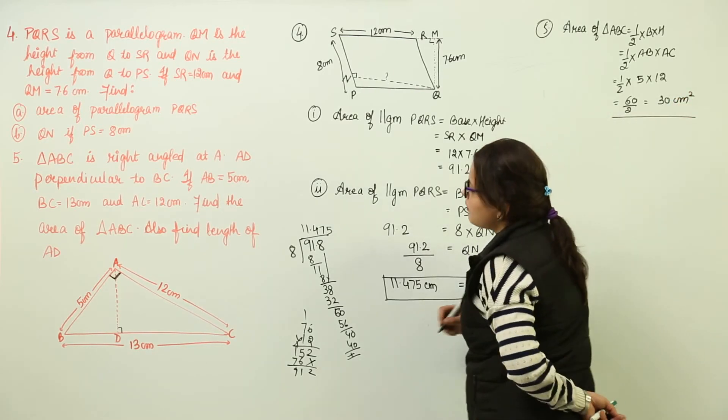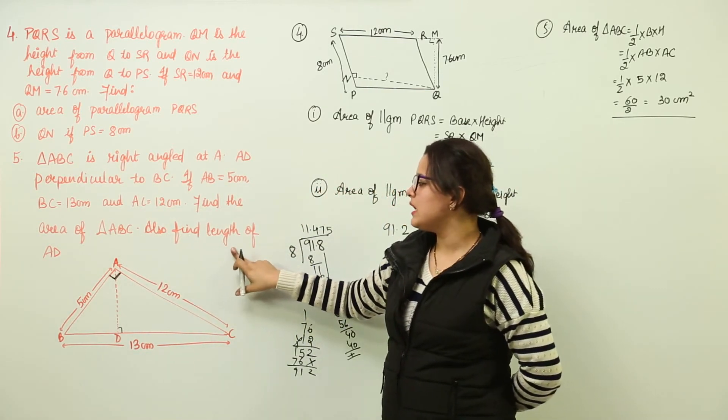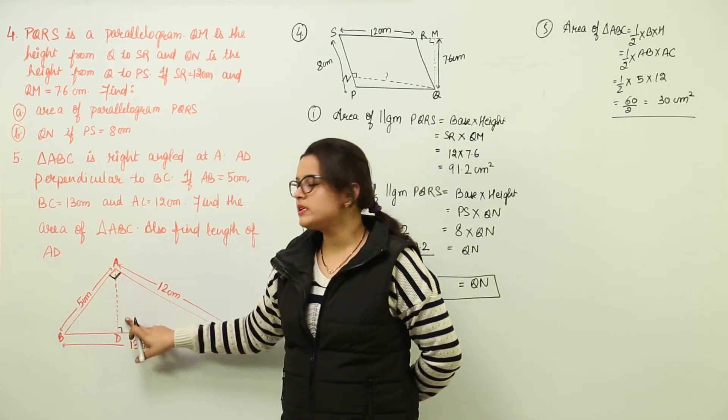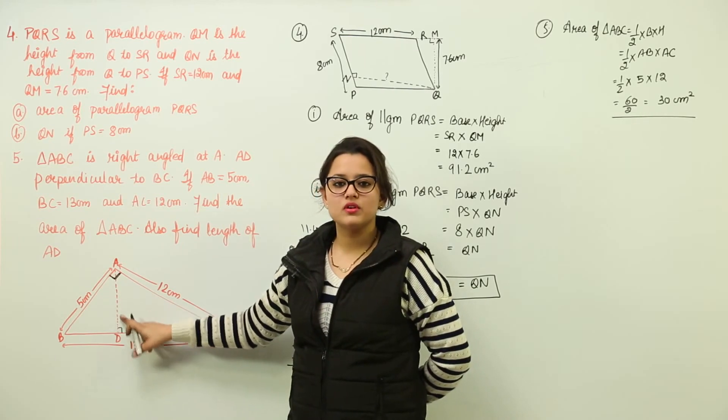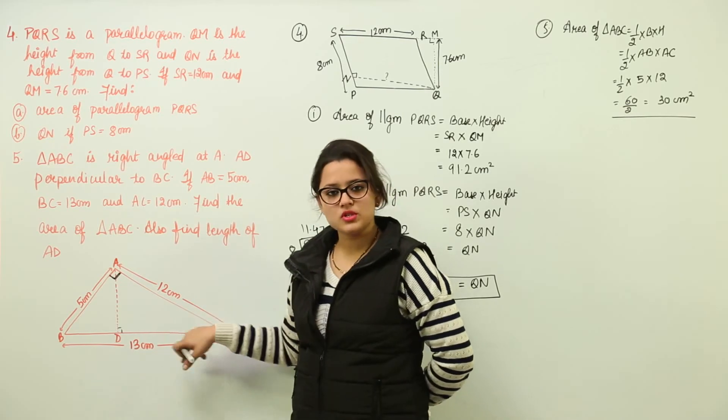Now this was the area to be found in the first step. Also we are going to find out the length of AD. Now what is the length of AD representing over here? It is representing the height for respective base BC of this triangle.